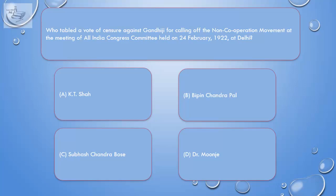Question: Who tabled a vote of censure against Gandhiji for calling off the non-cooperation movement at the meeting of All India Congress Committee held on 24 February 1922 at Delhi? A. A. K. T. Shah.